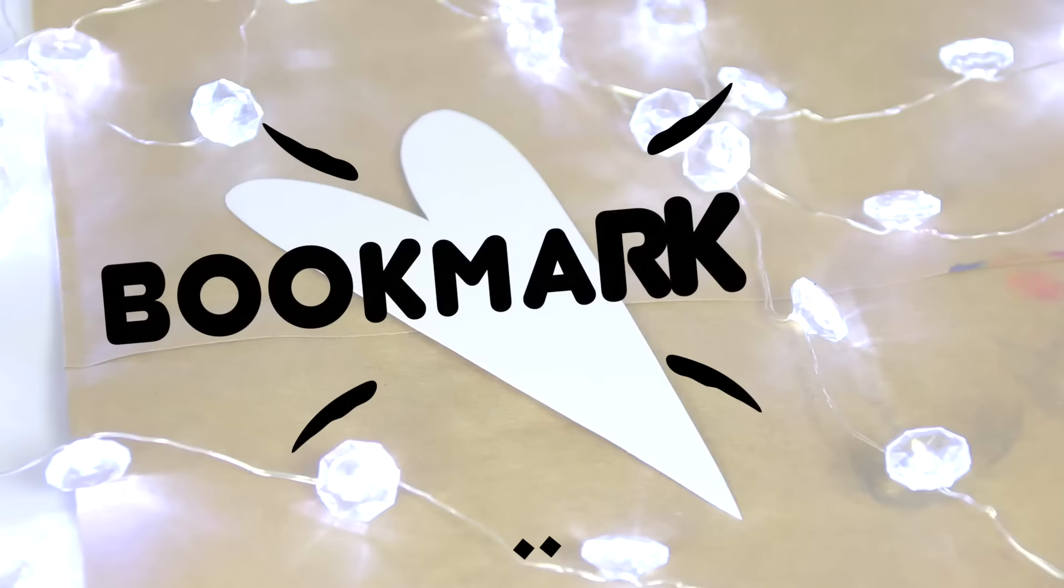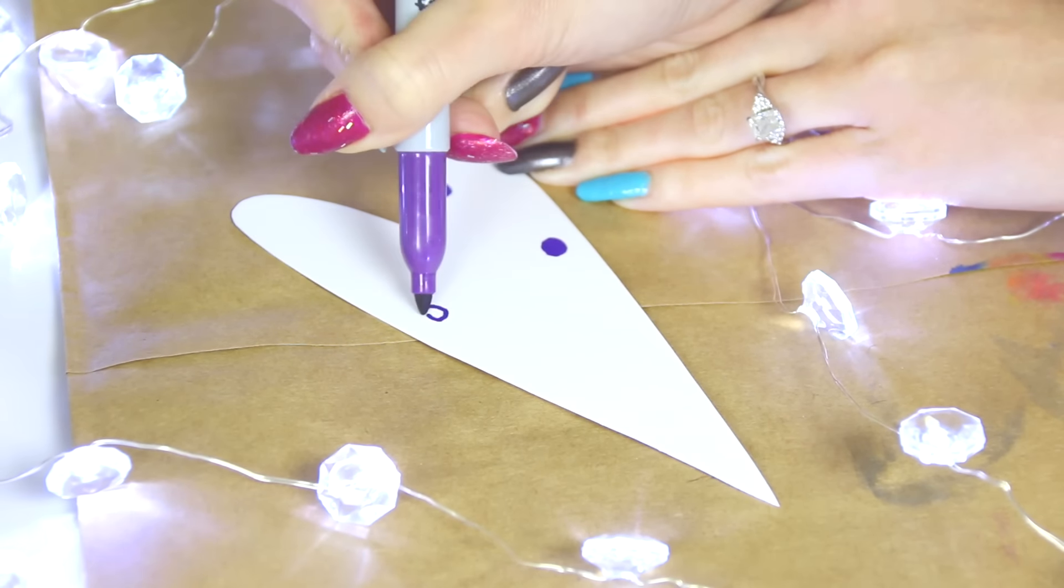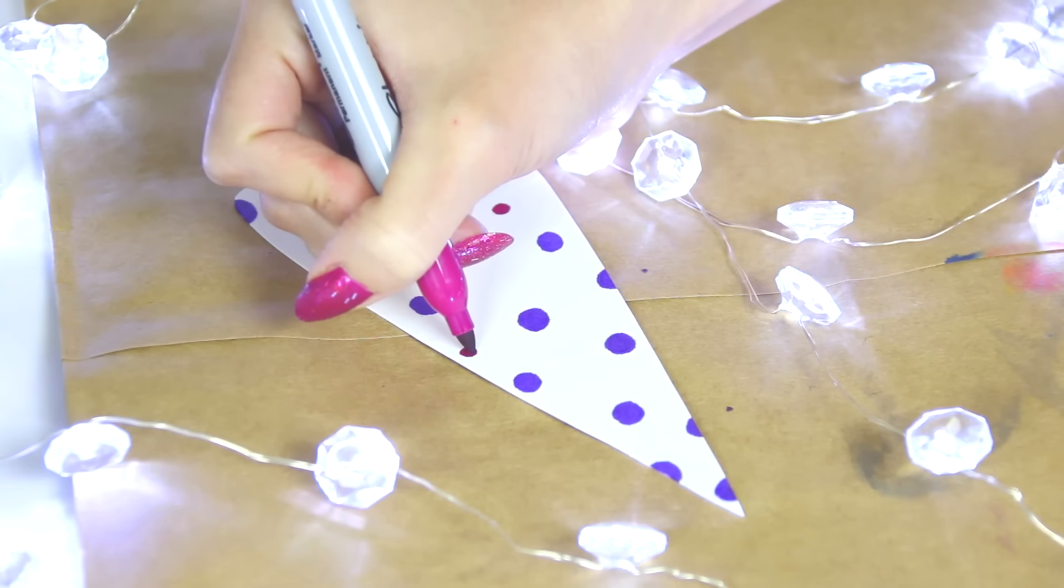Bookmark number three, I cut in the shape of a heart and I am putting sharpie dots all over this in various colors. This one's going to be using a different method from the first two bookmarks.